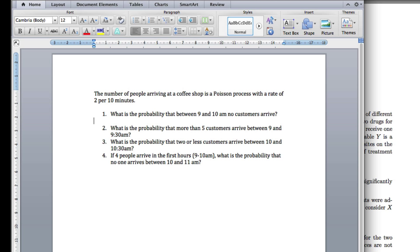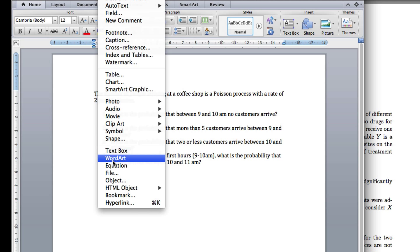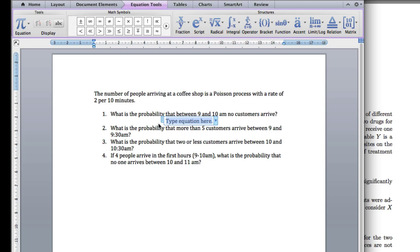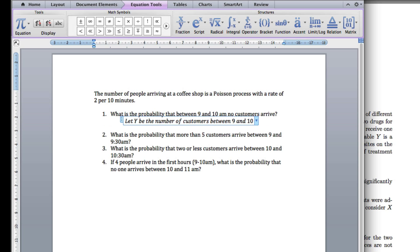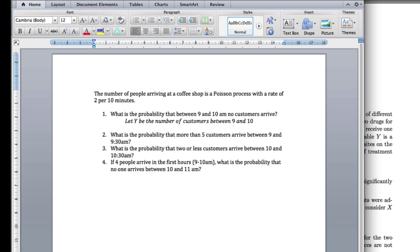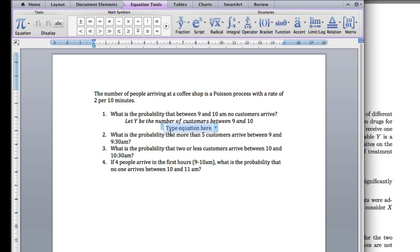Let's think about what the process is. We'll start by letting Y be the number of customers between 9 and 10. I've defined my random variable Y, and we're going to have set equations. Y, in this case, is going to have a distribution. If we've got a Poisson process, it's going to be a Poisson distribution.